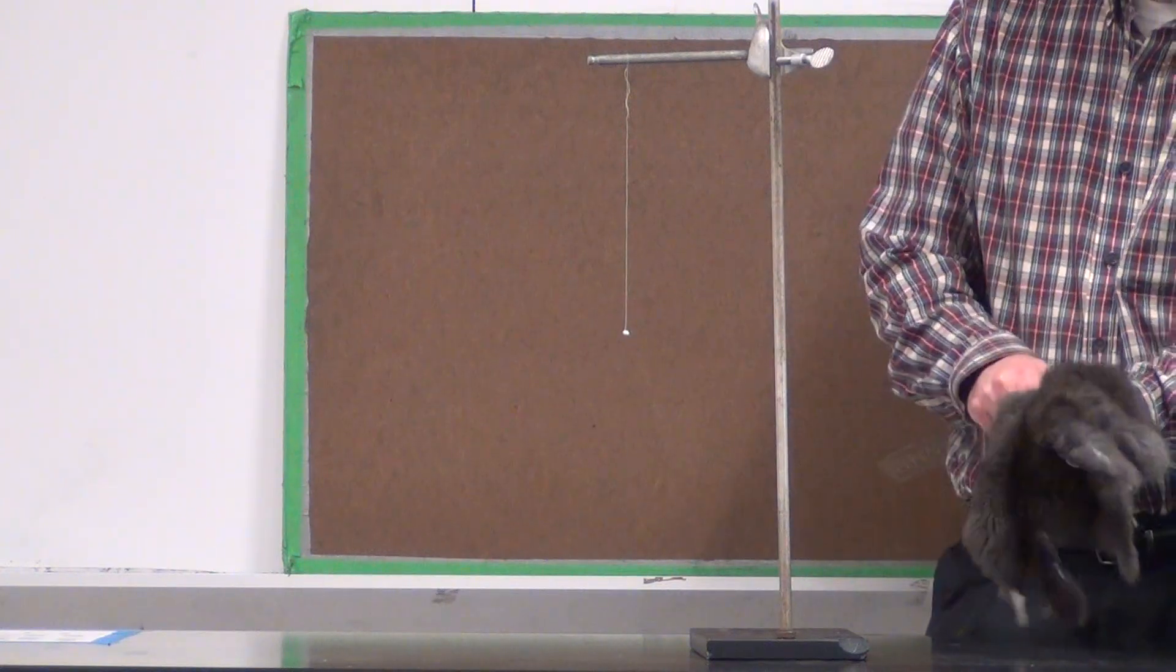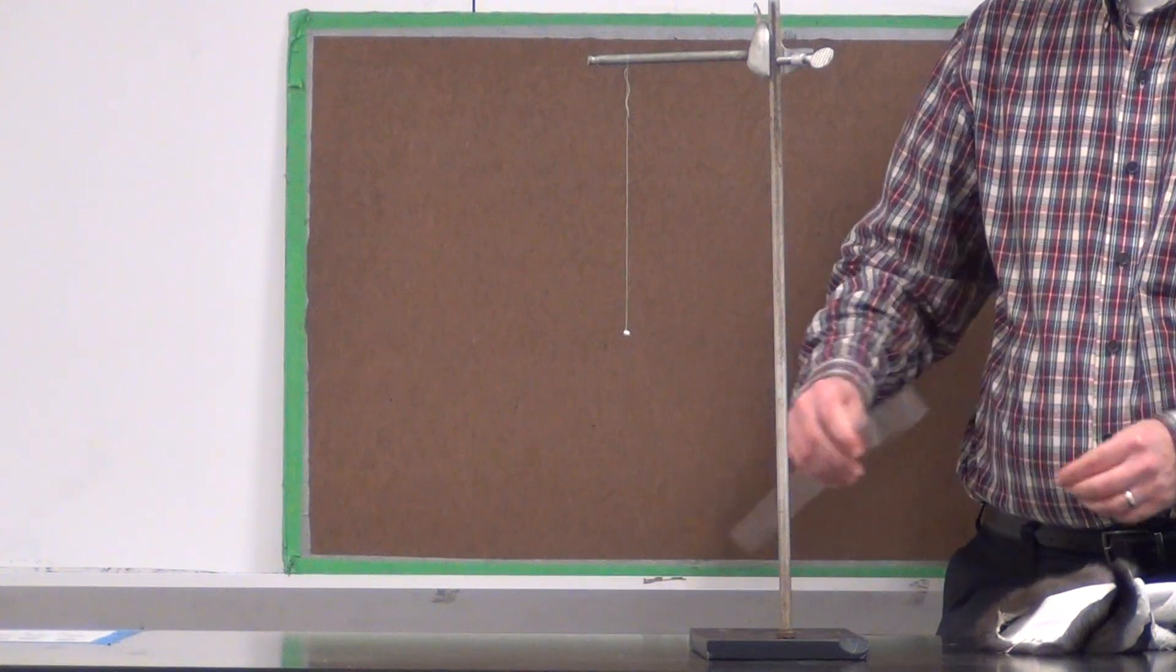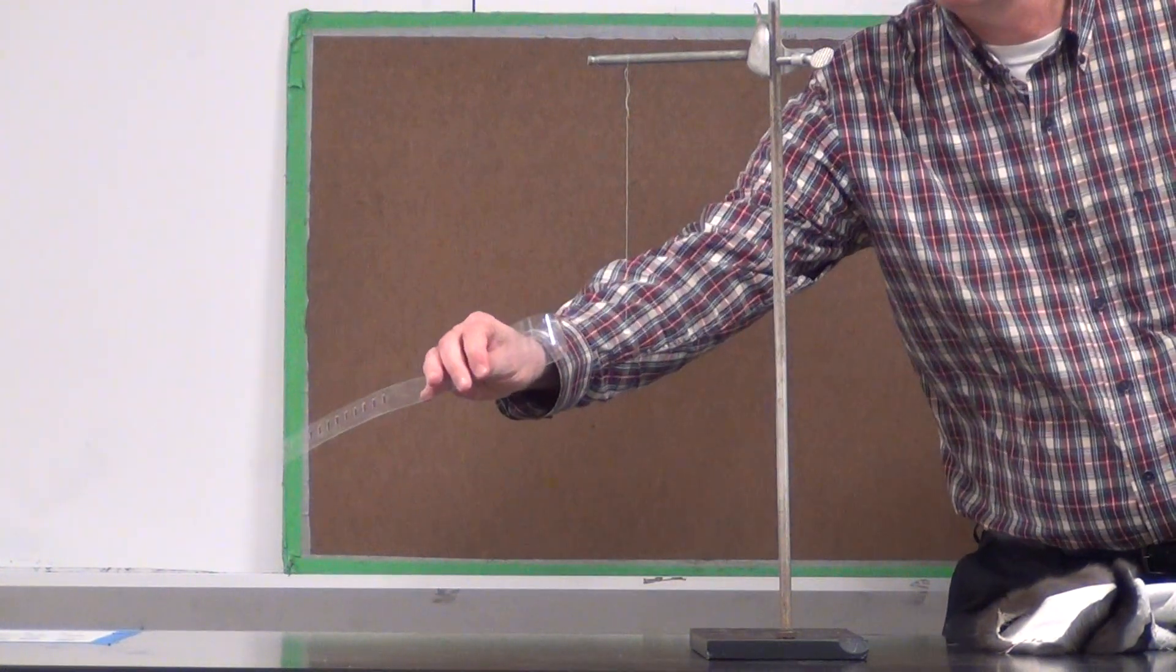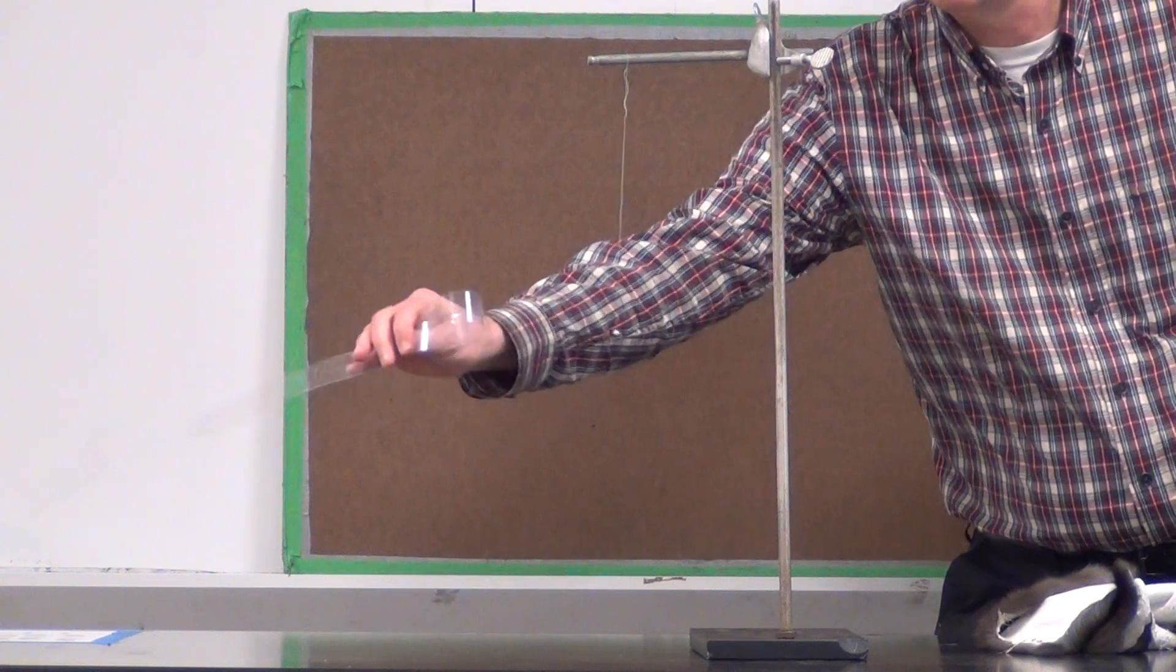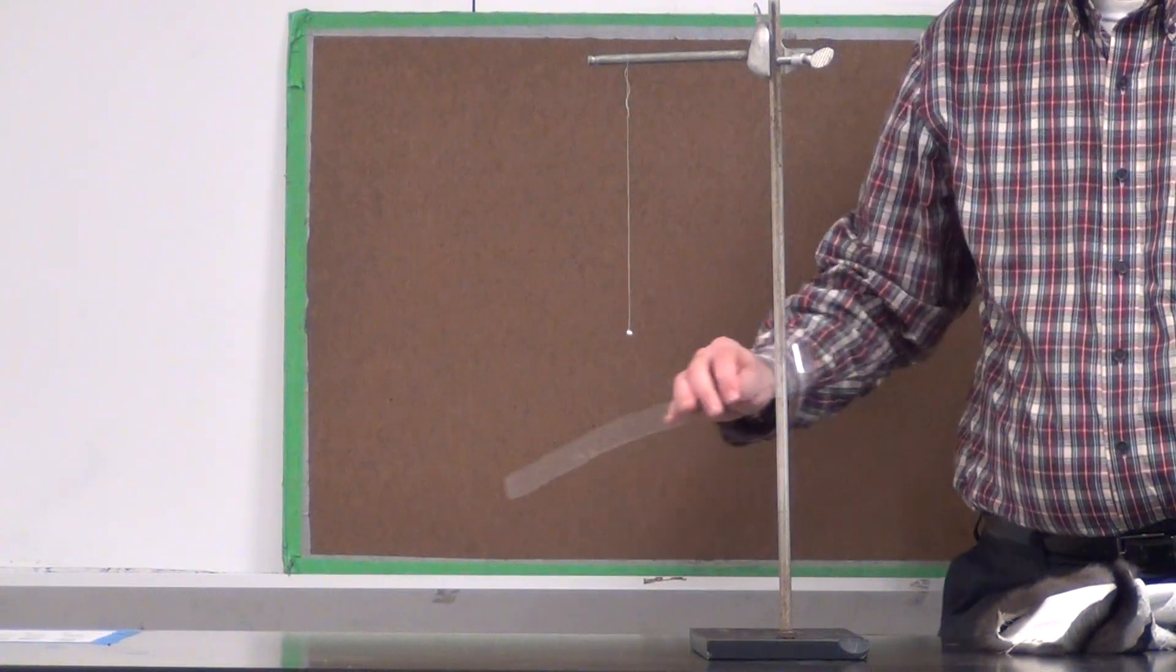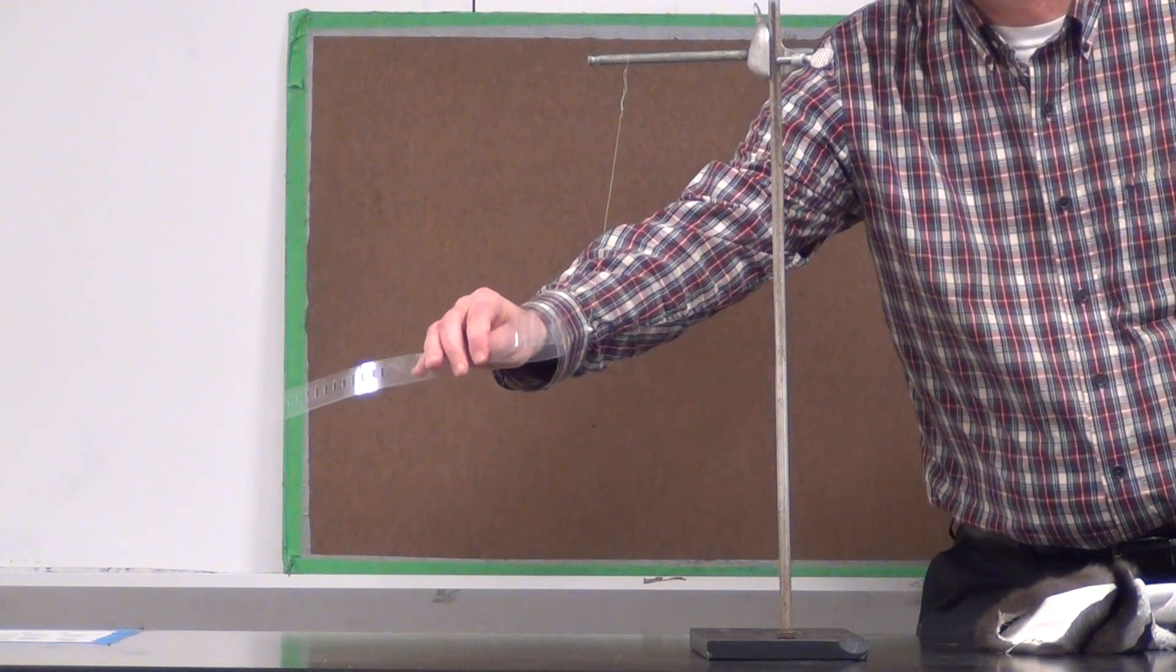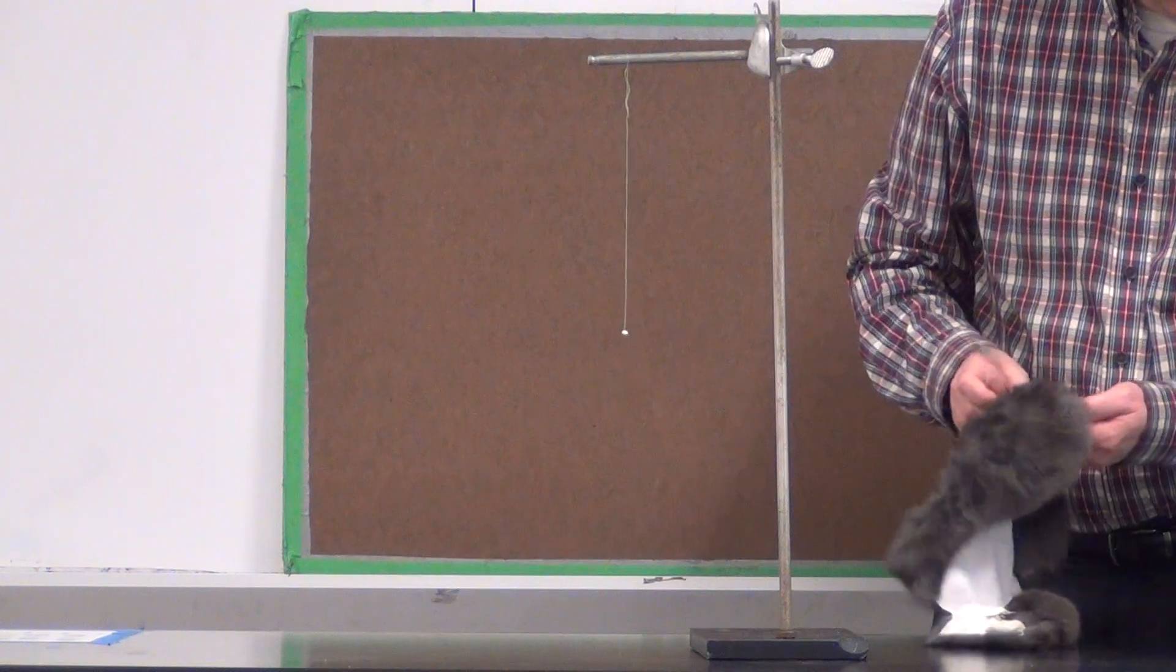This is number one of Investigation F. I'm going to bring this plastic strip close to the ball, but I'm not going to let the ball touch it. I want you to observe what's happening. Hopefully you saw what happened. I'll do it one more time. That was number one.